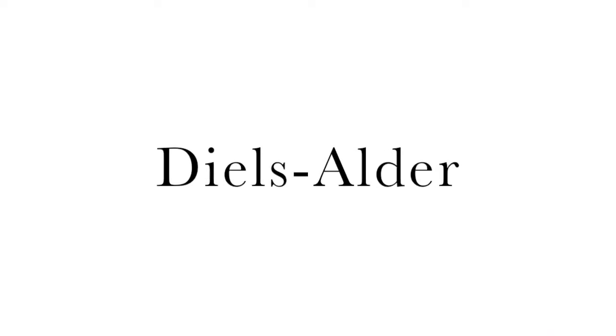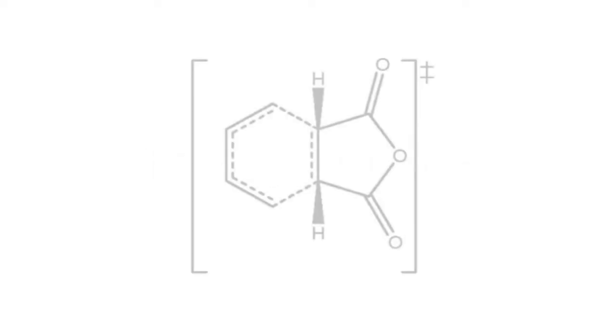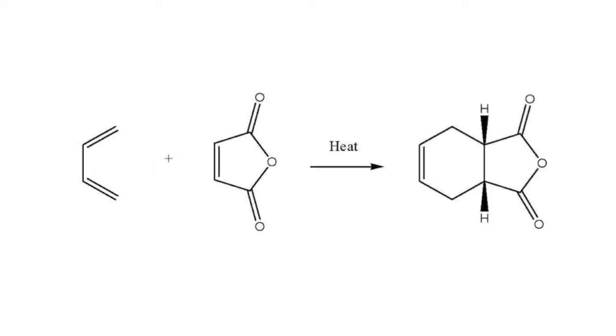Diels-Alder, everybody's favorite pericyclic reaction. That means all the electrons flow in a circle. This is a pi 2 plus 4 addition, where 4-pi electrons are provided by our diene, which is 1,4-butadiene, and 2-pi electrons are provided by our dienophile, also known as maleic anhydride.